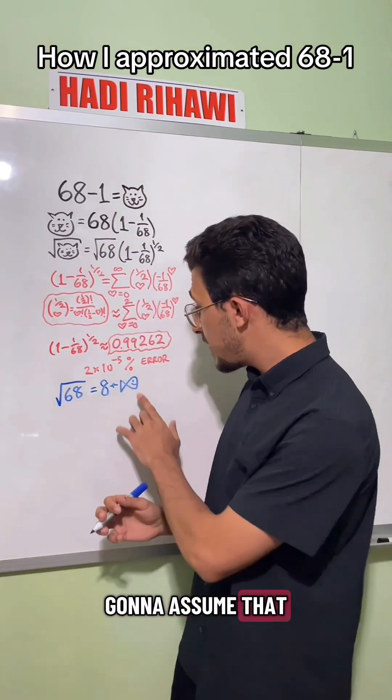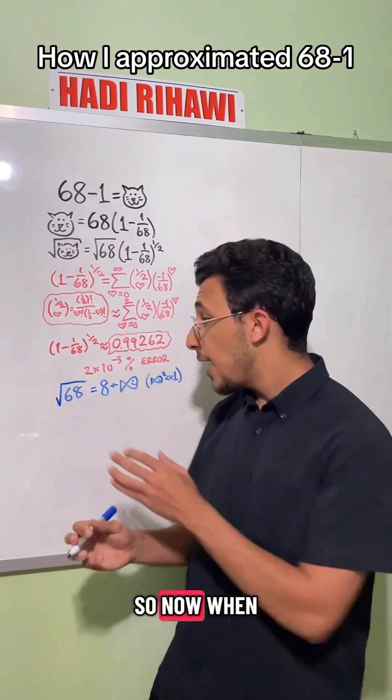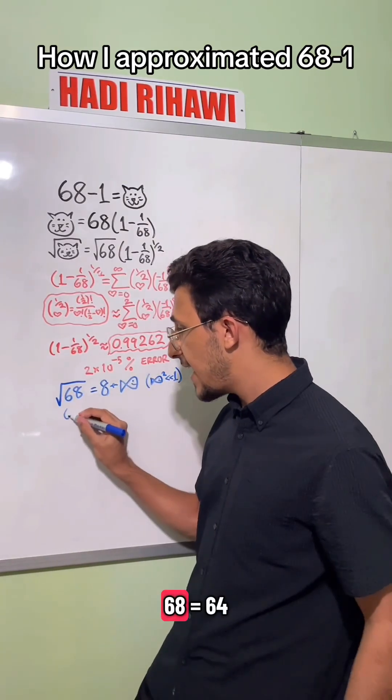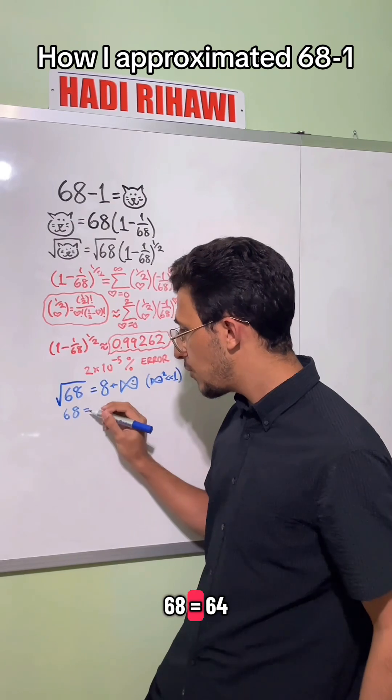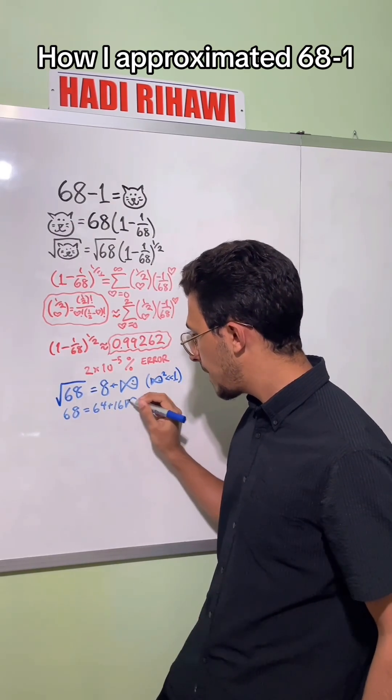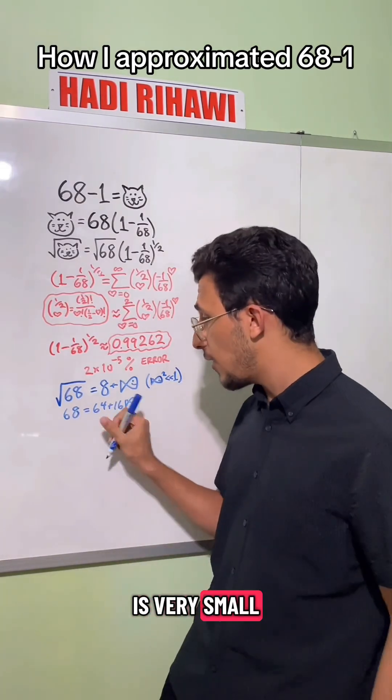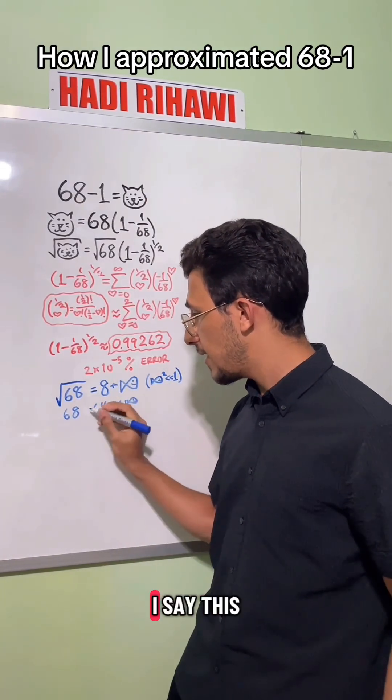The key step is that we're going to assume that fish is pretty small, so fish squared is going to be even smaller. So now when we square both sides, we'll have 68 equals 64 plus 16 fish plus fish squared, but fish squared is very small, so we're just going to get rid of it. I say this is approximate.